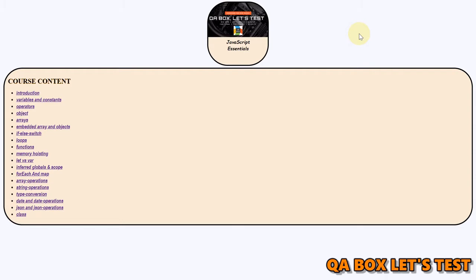Before we move on, if you have not watched part 19 of this series please do so, because both of these methods — forEach and map — accept a function as an argument. Most of the time we pass in an anonymous function, and that anonymous function accepts three parameters: the current value, the index of that value, and the array itself.